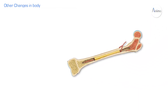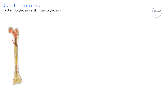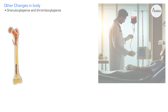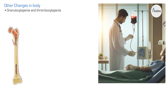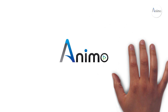Due to decreased production of blood cells, we find pancytopenia, including thrombocytopenia and granulocytopenia. When we try to manage this case with multiple transfusions, there is iron overload in the body, called hemochromatosis, because the body has no mechanism to get rid of excess iron. This concludes our section on aplastic anemia.